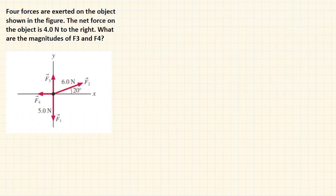Here we are going to solve another example problem on vector addition. Four forces are exerted on the object shown in the figure. The net force on the object is 4.0 newtons to the right. What are the magnitudes of F3 and F4?